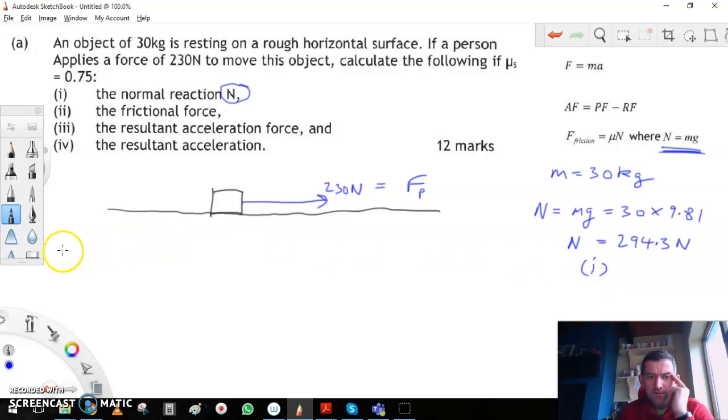Next up we're looking for the frictional force. Our formula tells us that the frictional force F_f is equal to μ multiplied by N. That's the μ_s static friction which is given as 0.75, and we multiply that by our normal force 294.3, and that comes out at 220.725 newtons.